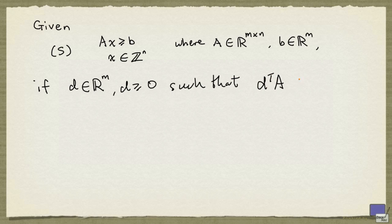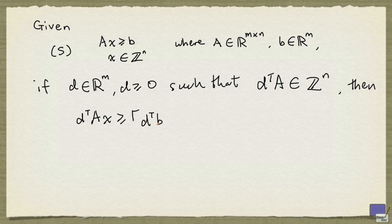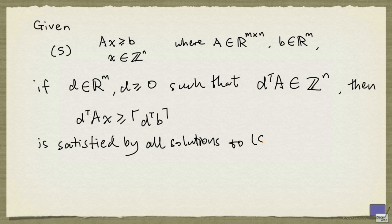d transpose times A has only integer entries, then d transpose times A times x greater than the ceiling of d transpose times b is satisfied by all solutions to the system S.